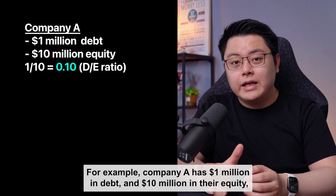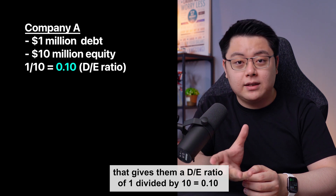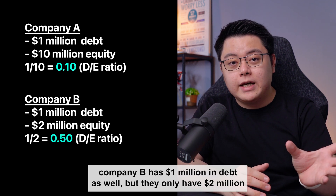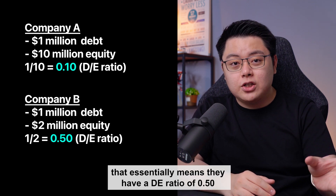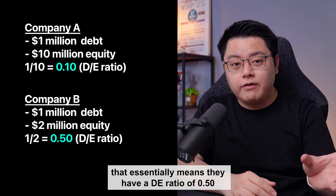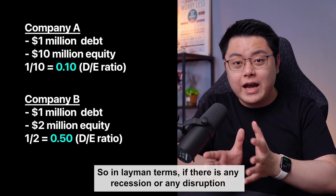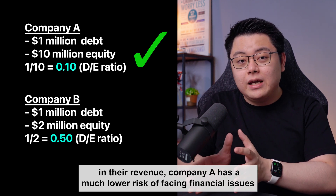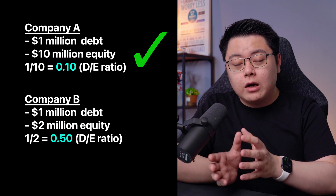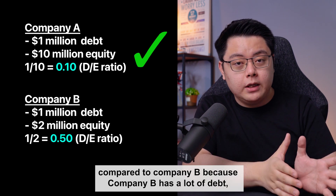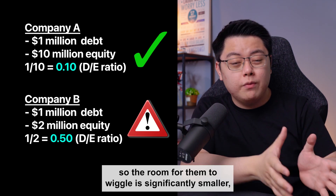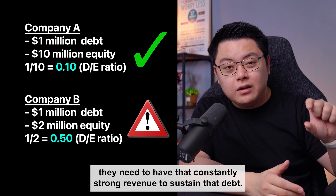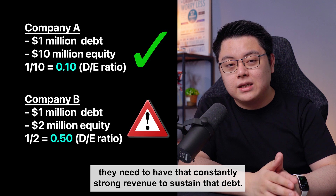A higher DE ratio means the company has more liabilities in the form of debt and loans, which translates to a higher leverage amount and higher risk factor. For example, company A has $1 million in debt and $10 million in equity — a DE ratio of 0.1. Company B has $1 million in debt but only $2 million in equity — a DE ratio of 0.5. In any recession or revenue disruption, company A has a much lower risk of facing financial issues compared to company B, because company B's debt translates to higher interest expense with significantly less room to wiggle.